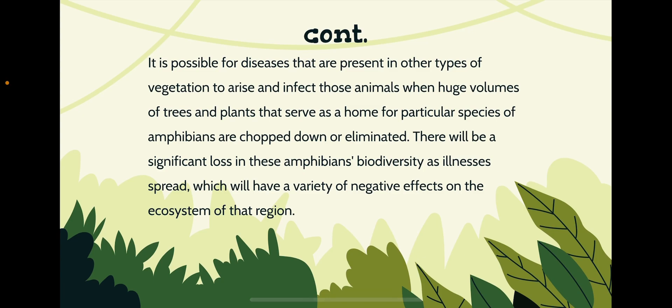It is possible for diseases that are present in other types of vegetation to arise and infect those animals when huge volumes of trees and plants that serve as a home and protect a particular species of amphibians are chopped down or eliminated. There will be a significant loss in these amphibians' biodiversity as illnesses spread, which will have a variety of negative effects on the ecosystem of that region.